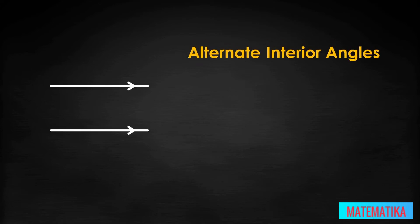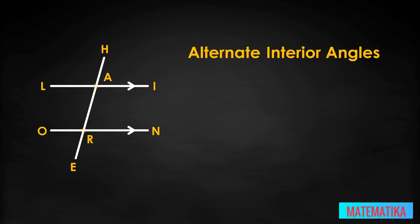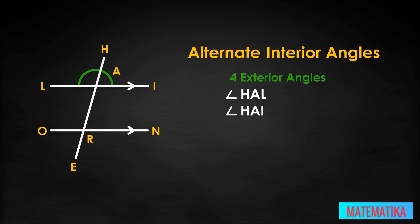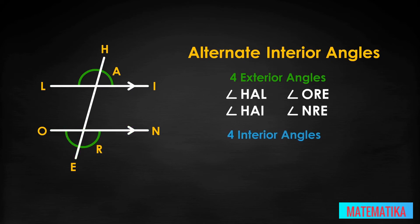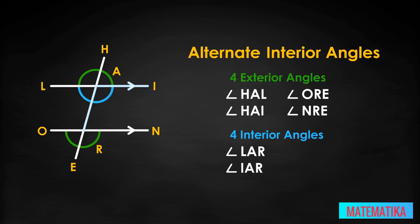Let's create parallel lines LI and ON and a transversal HE. The two points where HE crosses the parallel lines are points A and R. You mark drawings of parallel lines with little bird-feet marks, like V's on their sides. Notice we have four exterior angles: angle HAL, angle HAI, angle ORE, angle NER. And we have four interior angles: angle LAR, angle IAR, angle ARO, angle ARN.